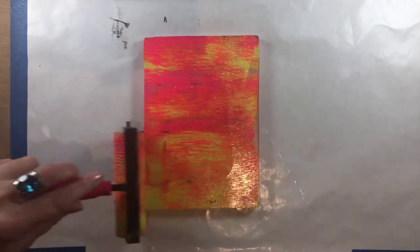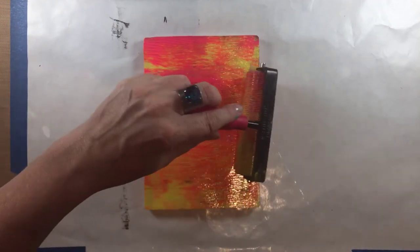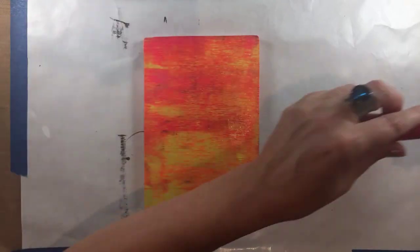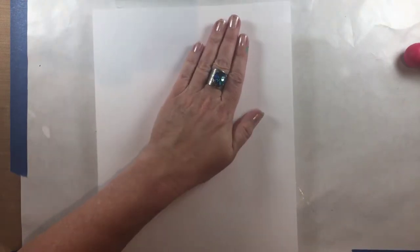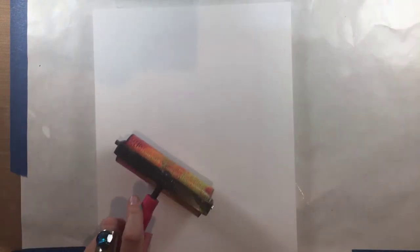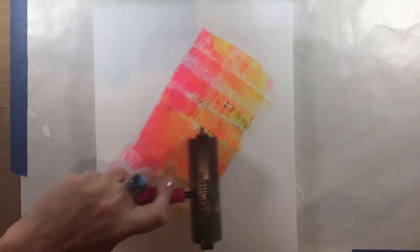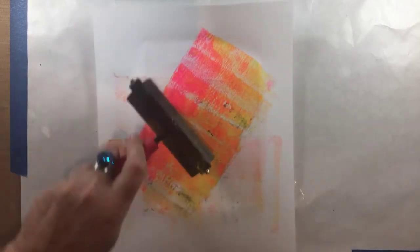Now I'm doing the same thing here, putting down paint on top of the dried image, and then brayering it just to make sure it makes really good contact. I feel like I got a little bit too much paint on there, but we'll see.